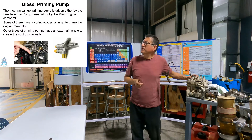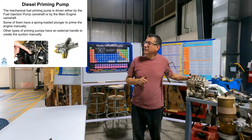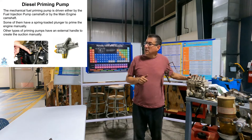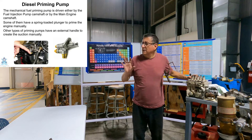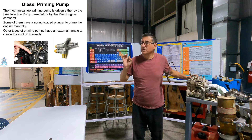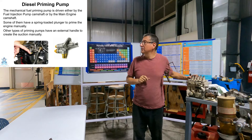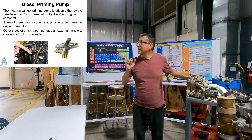What is the function of the priming pump? It's used for bleeding purposes — to bleed air.